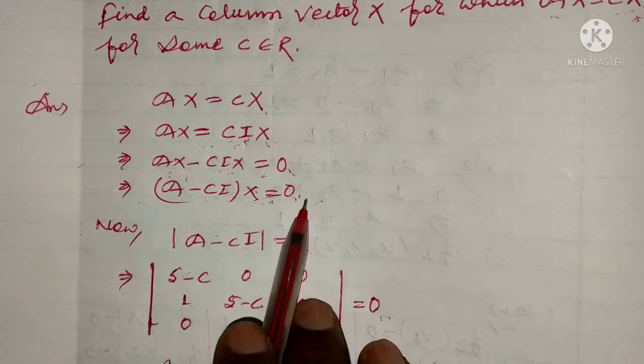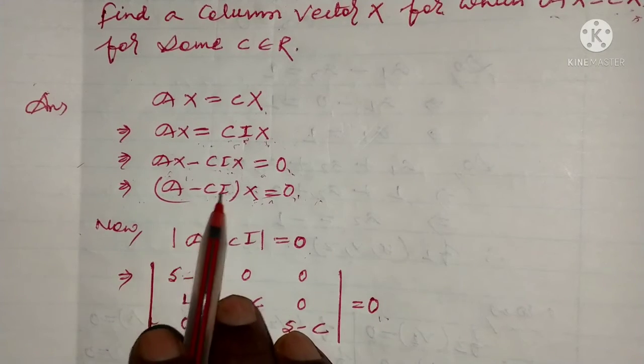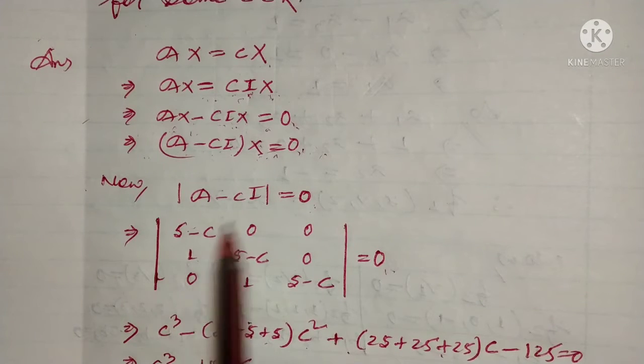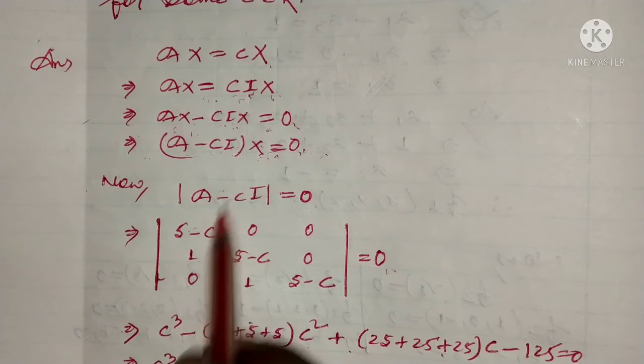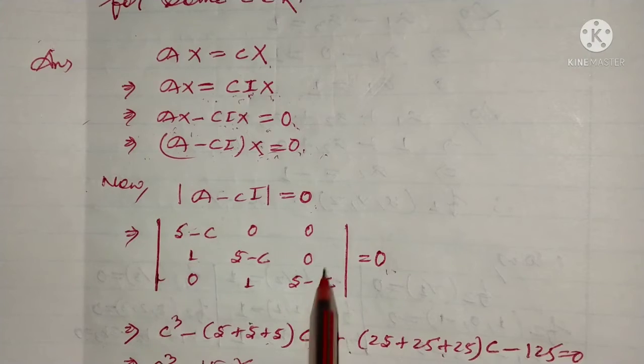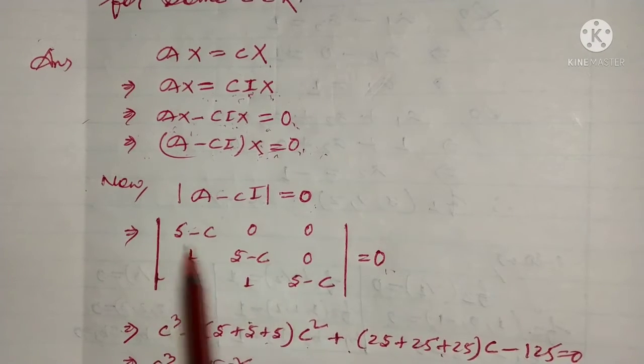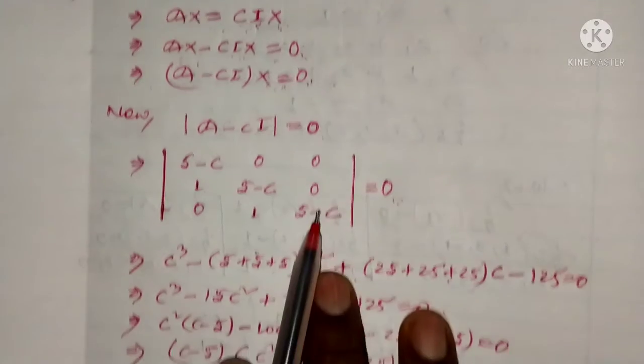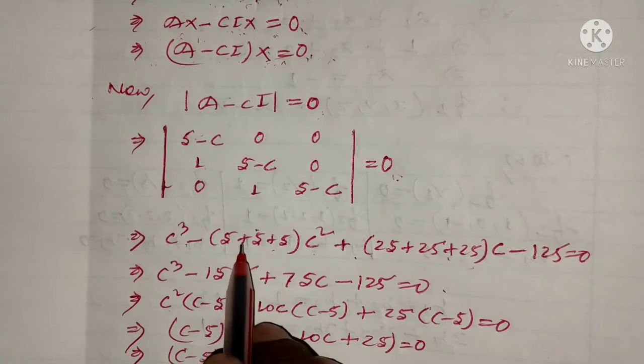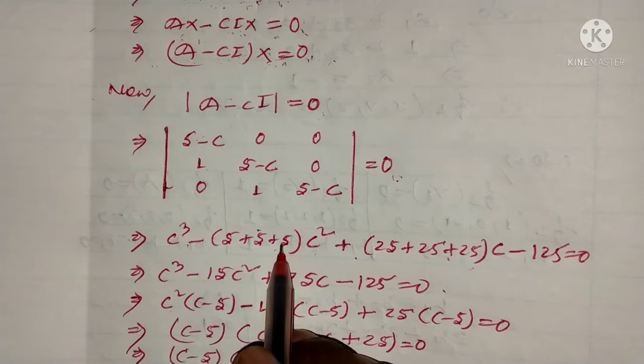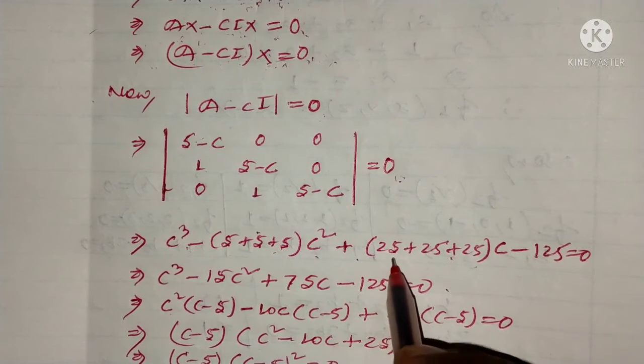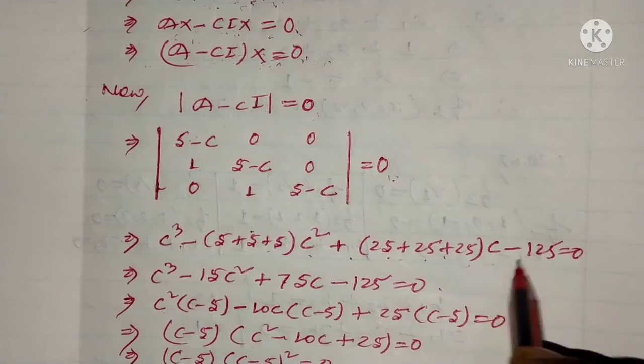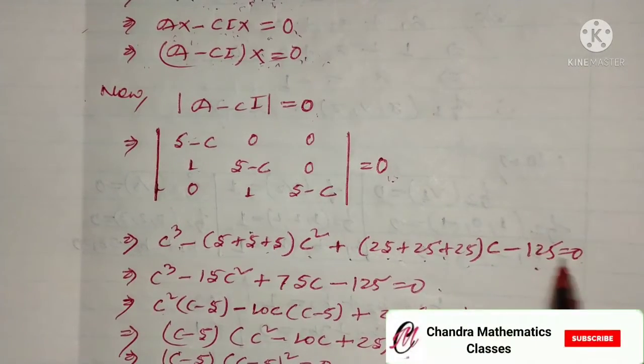Now, for non-zero solutions, the determinant of (A - cI) should equal zero. We expand this: c cubed minus sum of diagonal entries of A times c squared, plus sum of minors of diagonal entries times c, minus determinant of A is equal to zero.